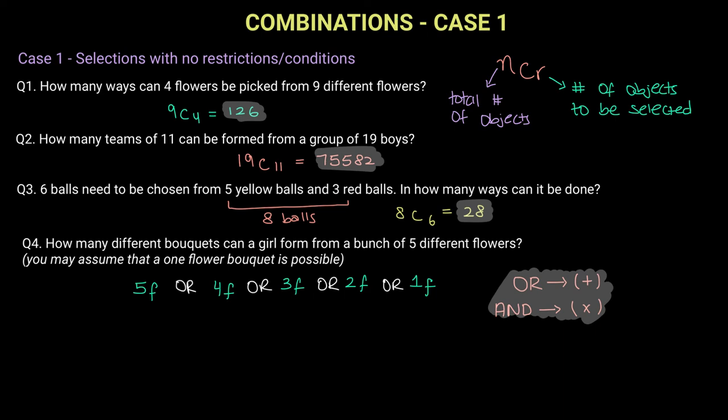However when we talk about and, we need to multiply, and an example of this will be shown in the further cases that we do. So to choose five flowers we technically need to choose five from five or which is a plus, we choose four from five or we choose three from five or we choose two from five or we choose one.